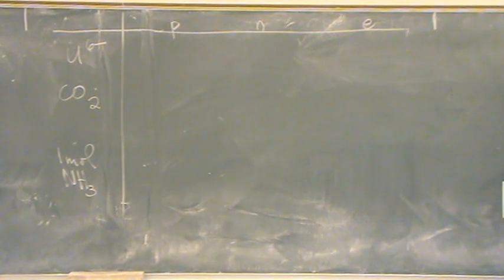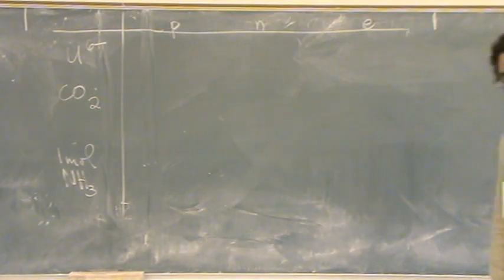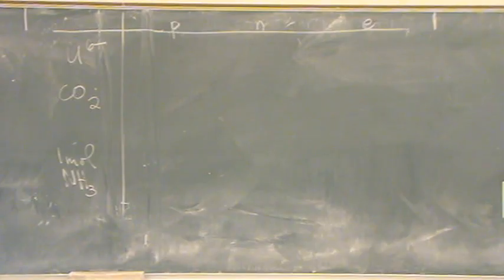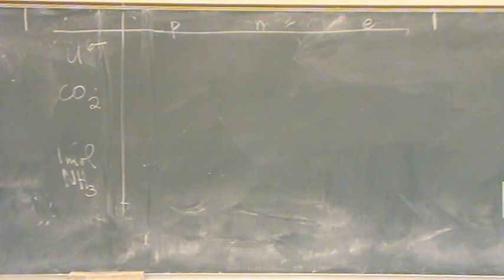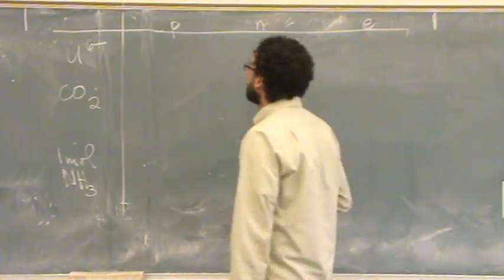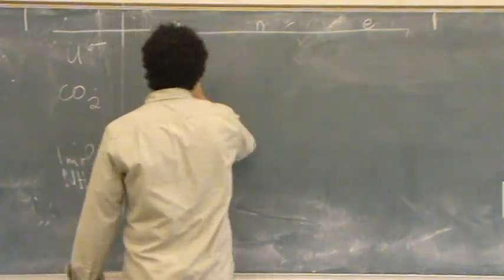We're going to calculate the protons, neutrons, and electrons for each of these cases. Let's start with the easiest one — that would be uranium 6 plus. You look at your periodic table and find the atomic number, which would be 92. So we have 92 protons.